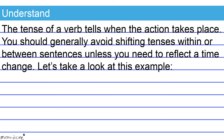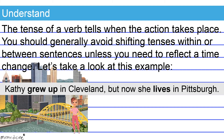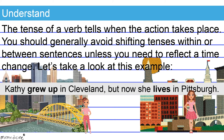Let's take a look at this example: Kathy grew up in Cleveland, but now she lives in Pittsburgh. The sentence shifts to the present tense to reflect a time change, and this is appropriate. We shift from Kathy's younger years, indicated by the verb phrase 'grew up,' to her present adult self with the verb 'lives.' This shift in tense is appropriate.